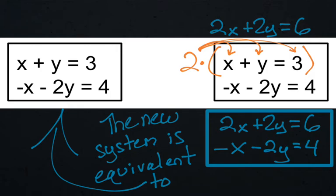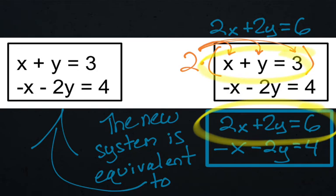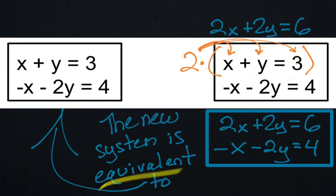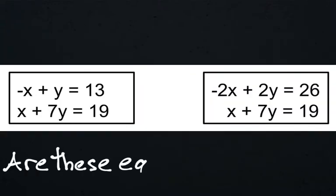The only thing we did was multiply the top equation by two, and that allowed us to make a new equation that is still equivalent to the original system. So this is what you need to look for: was there a number you could multiply by to make the two systems equivalent? That's the first thing you're going to want to check for.